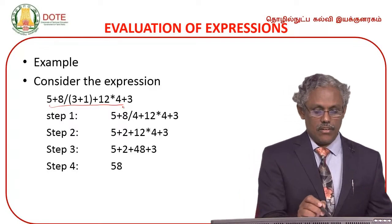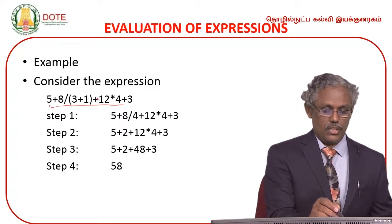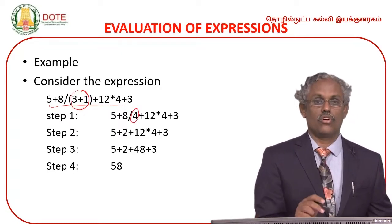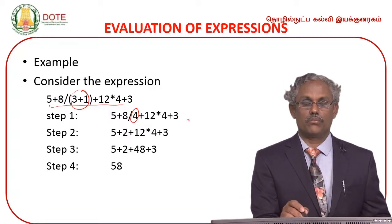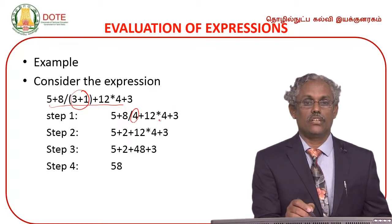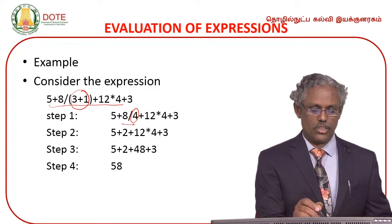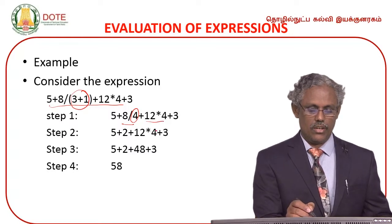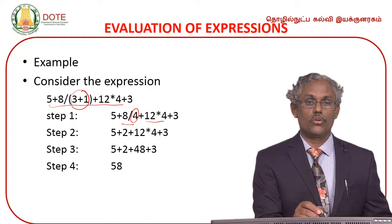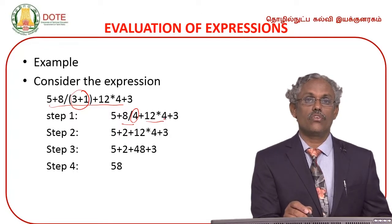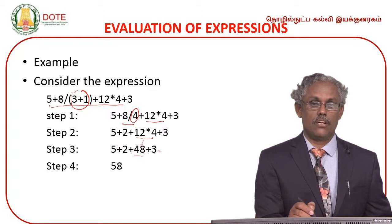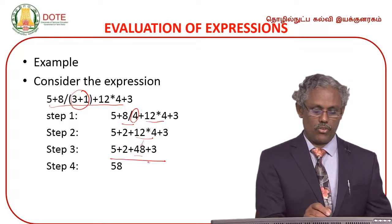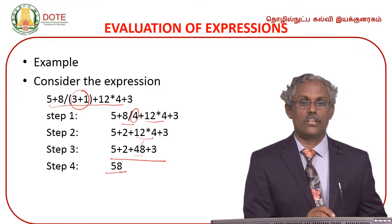For example, in the expression 5 + (3+1) * 12 / 8 / 4 + 3: parenthesis is evaluated first — 3+1 = 4. Then division and multiplication: 8/4 = 2, then 12*4 = 48. Then addition: 5 + 2 + 48 + 3 = 58. That is the final result.